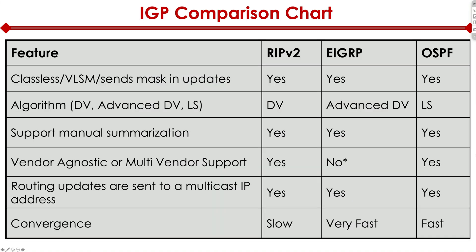Now let's quickly look at the IGP comparison chart. There are six different features to examine. All three routing protocols — RIP version 2, EIGRP, and OSPF — are classless. From an algorithm perspective, RIP version 2 uses distance vector, EIGRP uses advanced distance vector, and OSPF uses link state.